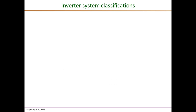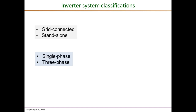PV inverters can be classified in many different ways. It could be based on whether they are grid-connected or supporting standalone AC loads, or in terms of single-phase or three-phase applications. Most residential level and microinverter applications are single phase, whereas commercial and utility-scale applications are three phase.